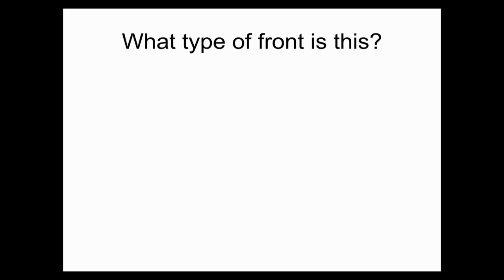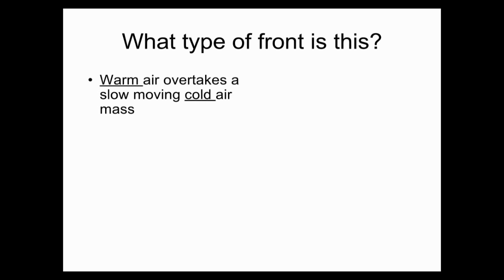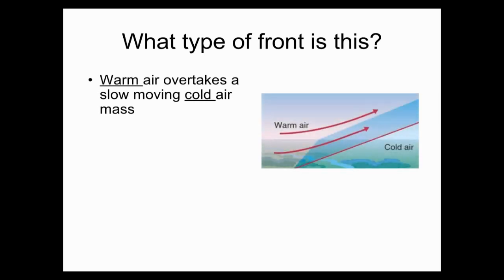The next type of front is when warm air overtakes a slow-moving cold air mass. Because the cold air is denser, the warm air moves over the cold air. Warm fronts are represented by red half circles — red for the heat. The half circles look like a sunshine coming up over the horizon, which helps remember that it's a warm front.